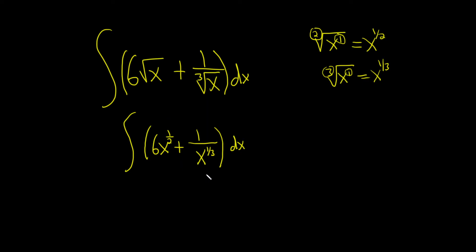Now let's keep going and finish writing everything as x to a power. This is done but this one is not because it's downstairs.